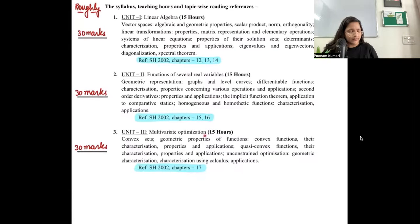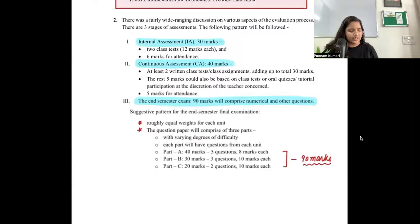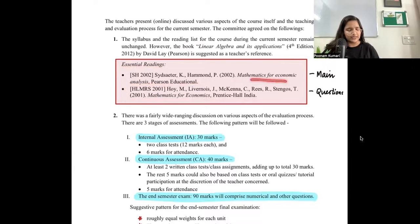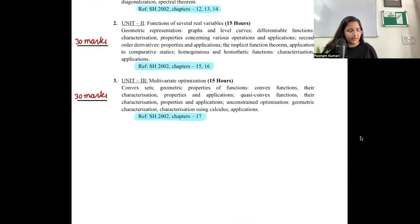The third unit you will have is multivariate optimization. When you have a function of multiple variables, how do you find maxima, minima. When there are constraints - budget constraint or different types of constraints - under those constraints how do you maximize your function. Your reference will be Sydsaeter and Hammond chapter 17. So there's not much complication here. Start from chapter 12 and end at chapter 17. So you basically have six chapters in your syllabus. Your reference book is Sydsaeter and Hammond. The other book they've given in essential readings you can use for question practice.